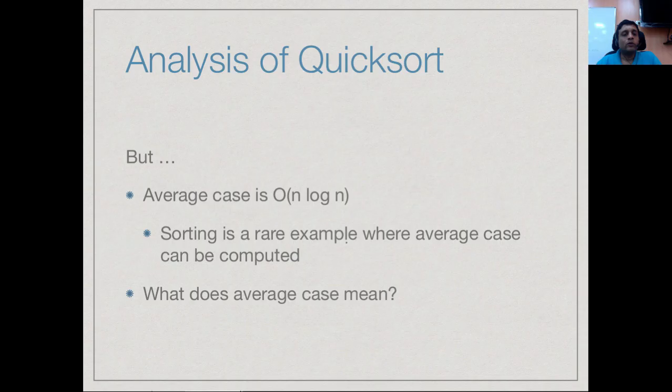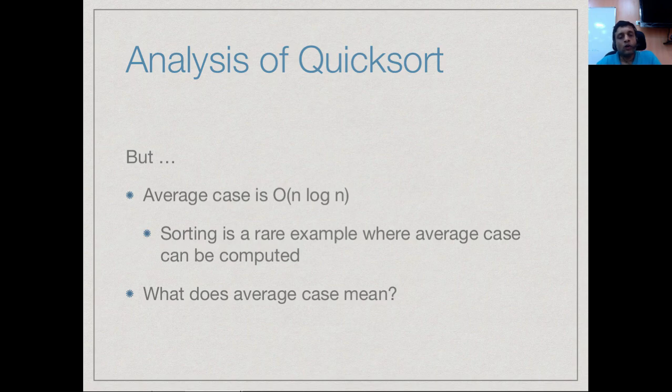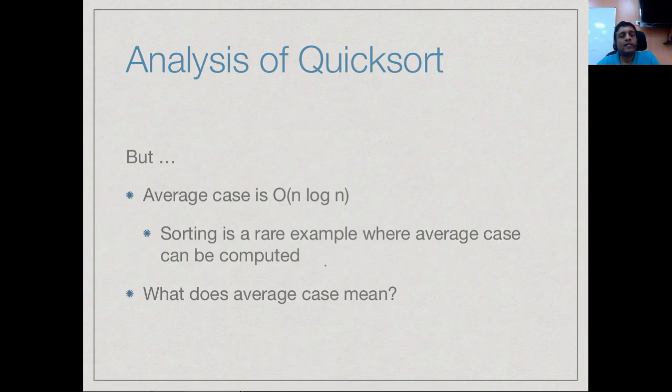It turns out that quicksort does not behave in this worst case way very frequently. We can actually compute what is called the average case complexity and show that it is n log n. We will not actually show that it is n log n, but we will try to at least explain what it means to compute the average case analysis of quicksort. As we said in the beginning, average case is very difficult to compute, so let us see what it involves.